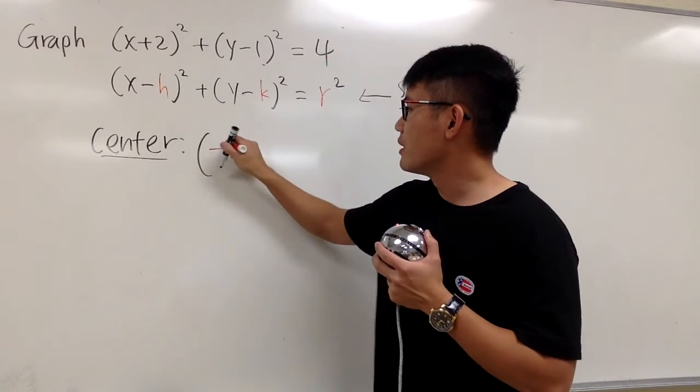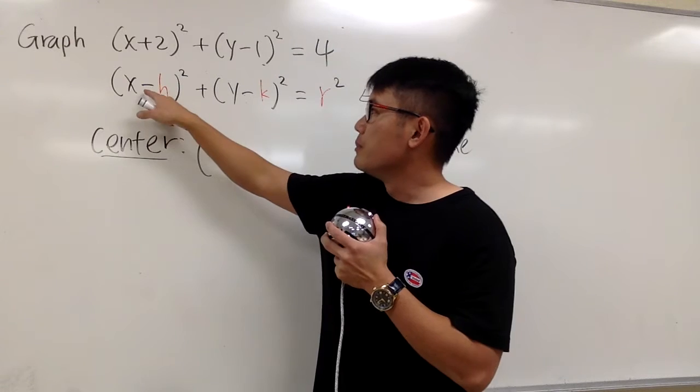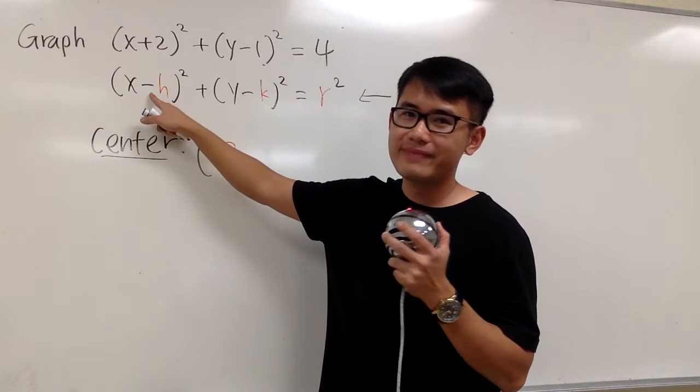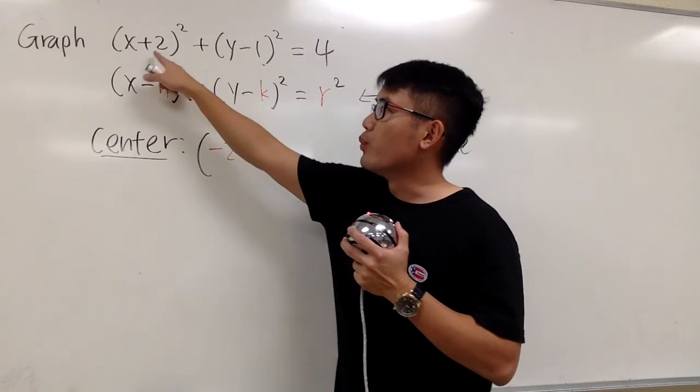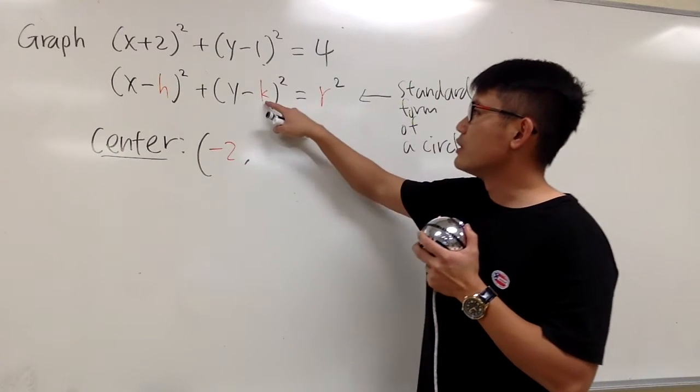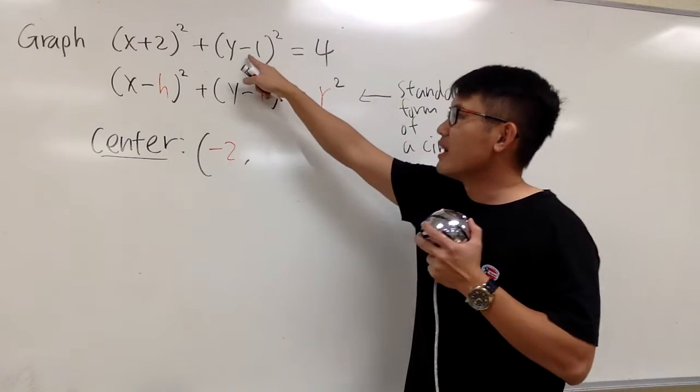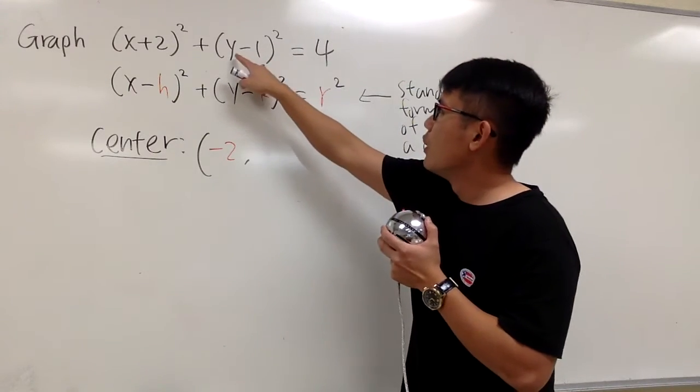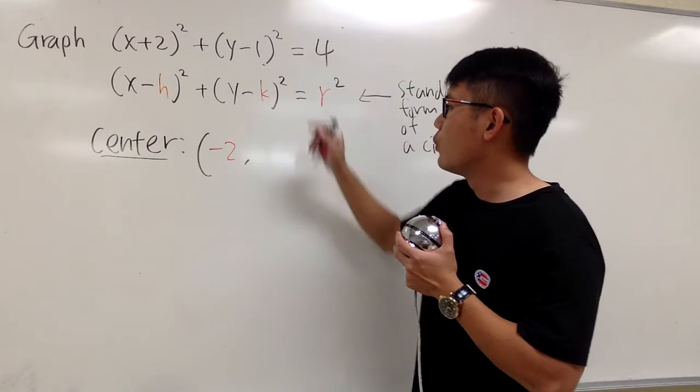So be sure you cannot do the opposite of the things that you have inside the parentheses, because the form is a negative in the first place. h has to be negative 2, so that negative negative 2 will give you the positive 2. h has to be negative 2, and then for the k value, it's just going to be 1. Once again, you see minus 1 here, but technically it's just 1, because you see y minus 1, y minus k, k has to be 1.